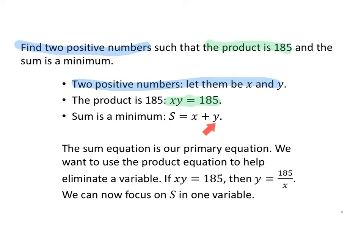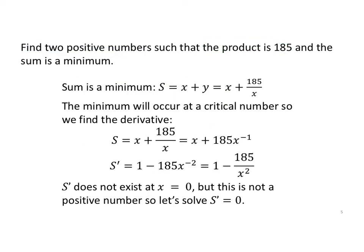So if xy equals 185, then y equals 185 over x. I'm going to replace this y value as 185 over x in my S equation. And now S is in terms of a single variable. The sum is a minimum, so the sum equals x plus 185 over x.